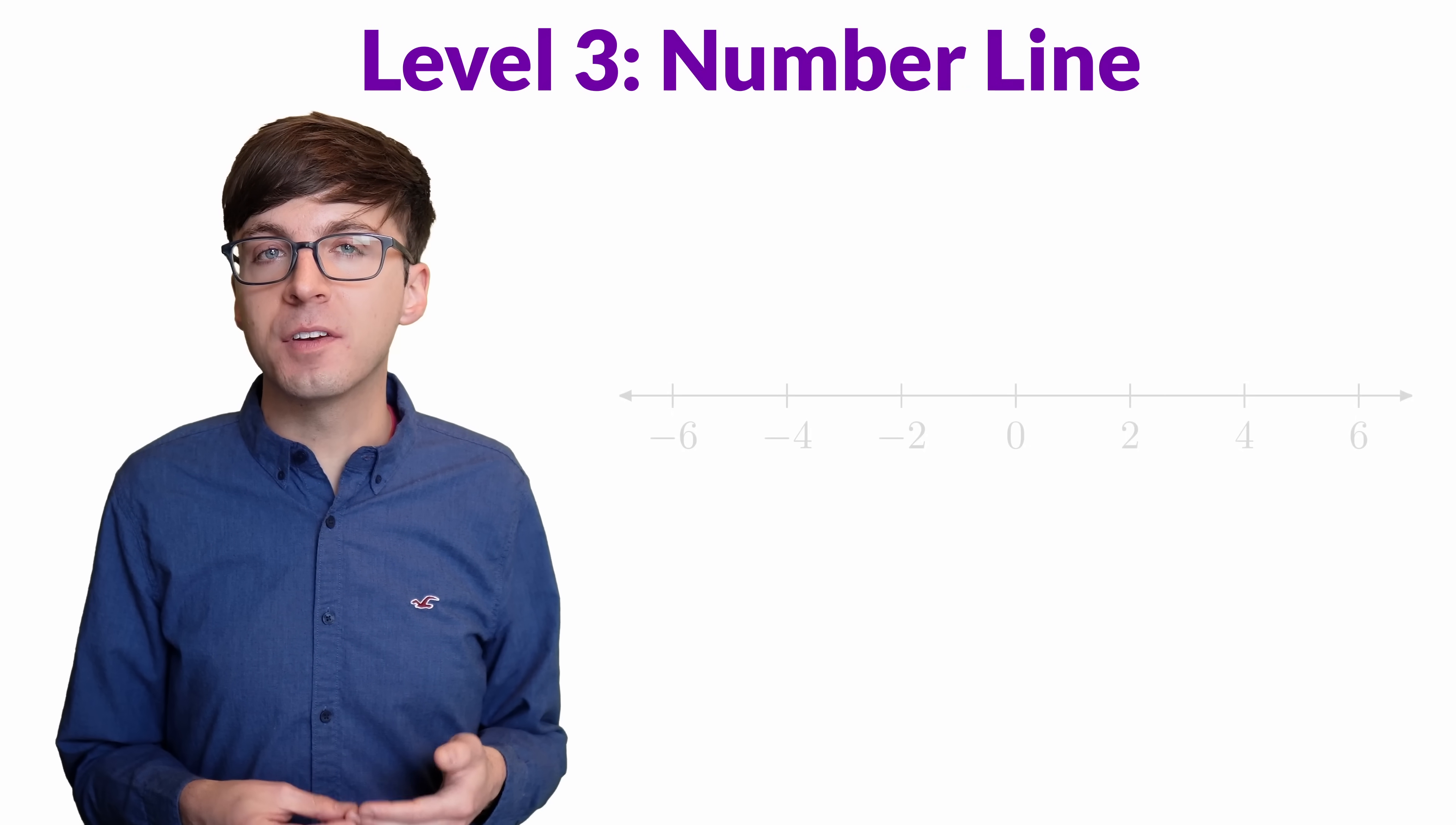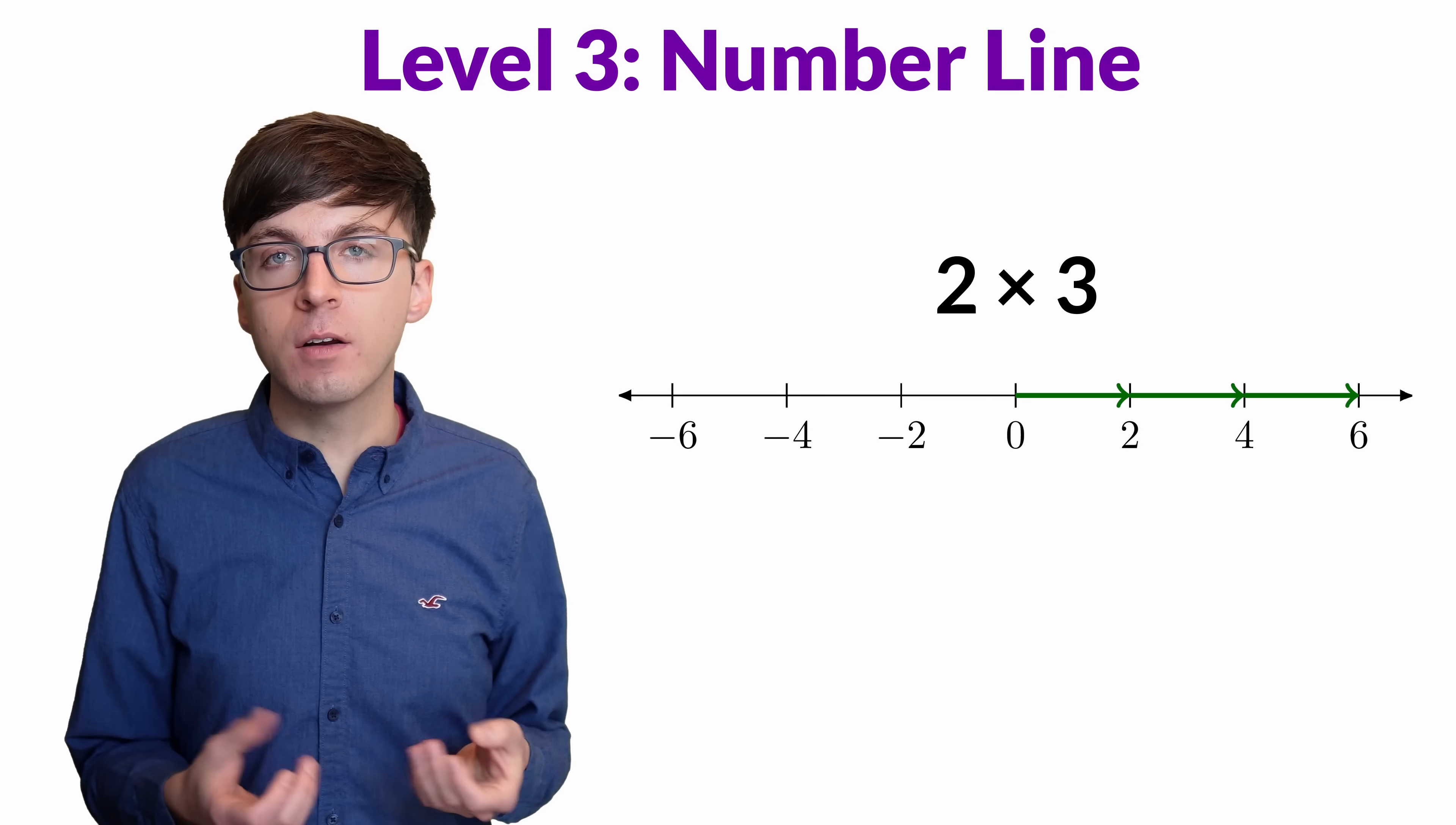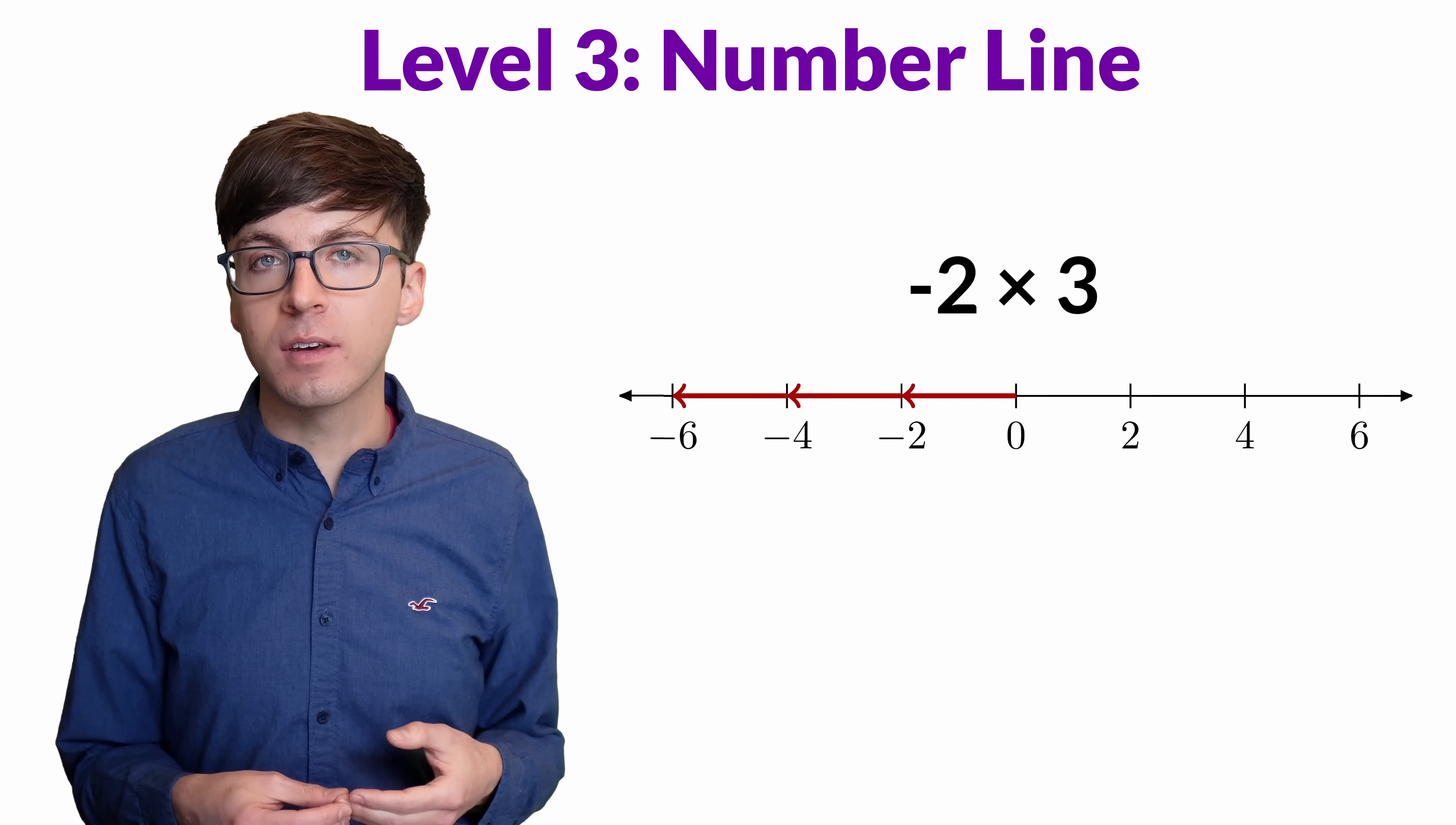For level three, let's look at the number line. When we multiply 2 times 3, this is repeated addition: 2 plus 2 plus 2. We move 2 units to the right on the number line 3 times, and we end up at 6. If we multiply negative 2 times 3, we move 2 units to the left 3 times, ending at negative 6.